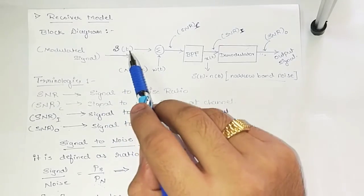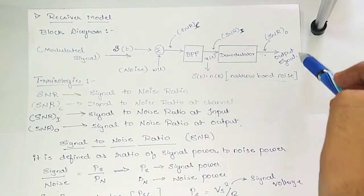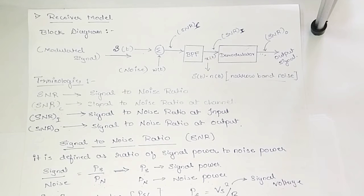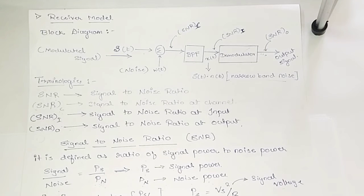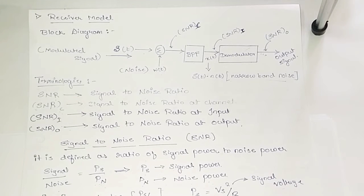In this block diagram, we have the receiver part. Recall the block diagram of a general communication system. In that system, the first block is the message signal, the second block is the transmitter, third is the channel, fourth is the receiver, and the fifth is the user of information. In the channel box, we write another separate box called noise — noise is added in that channel.